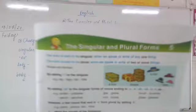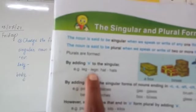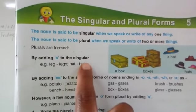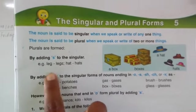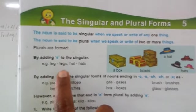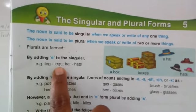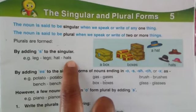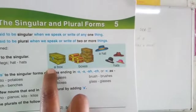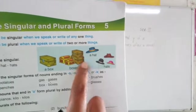The first rule is: plurals are formed by adding 'S' to the singular. For example, 'leg' changes to 'legs', 'hat' changes to 'hats'. You can see the pictures — a box and many boxes, a hat and many hats.